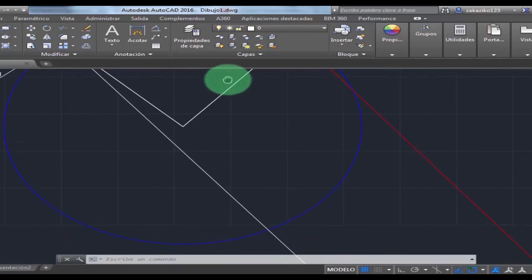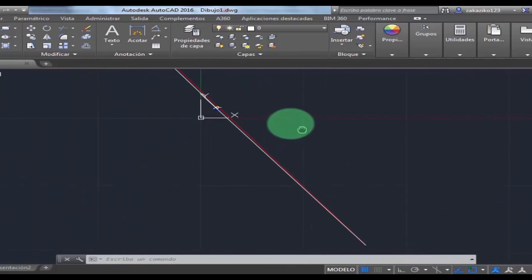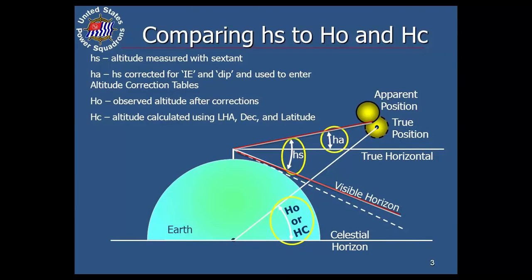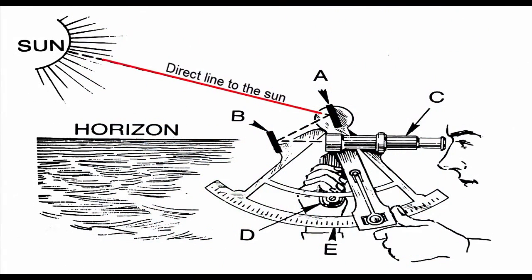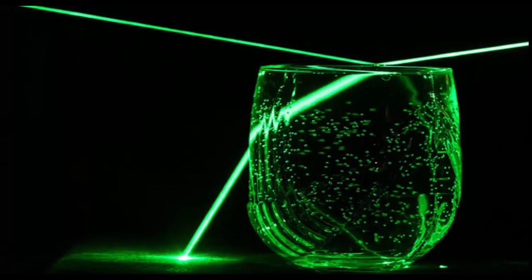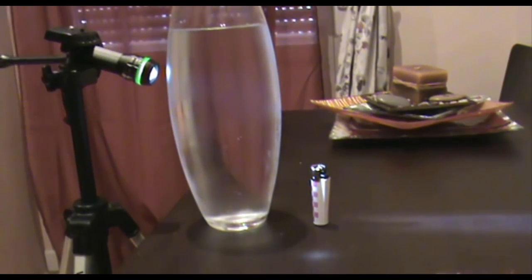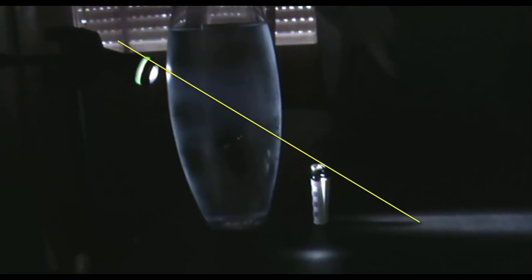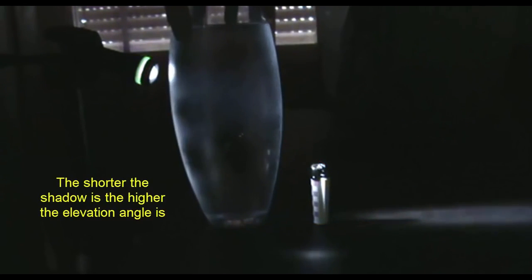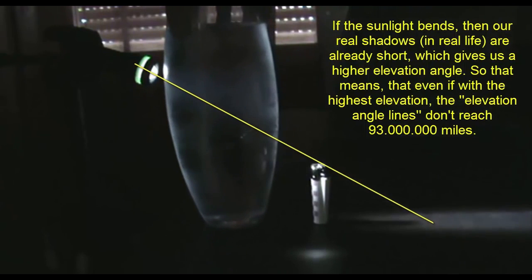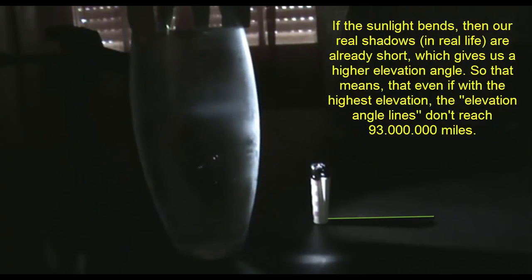I really tried so hard to make this thing work, but in vain — not because I don't know how to calculate distances, but because the whole model is 100% wrong. Some people are going to tell me that sunlight bends because of the atmosphere. Well, if sunlight really bends just like a laser beam through water, this is going to make it even worse. If the sunlight bends it will make shadows look shorter, the elevation angle will be higher, meaning the angles we already used are already exaggerated, yet the Sun is still not 93 million miles away.